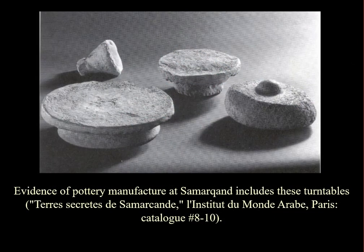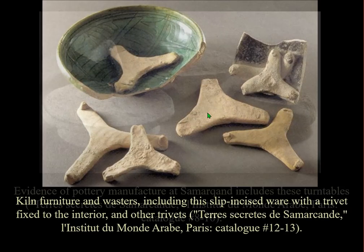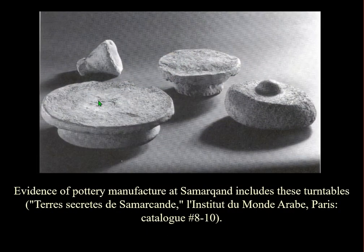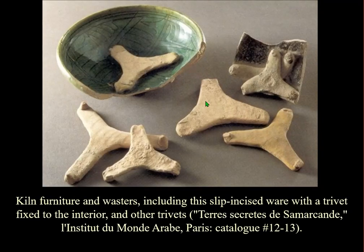Excavations by a French team at Afrasiyab have found evidence for pottery manufacture. These are like turntables found in a kiln site — probably turntables for forming pottery. These are kiln furniture used for separating the pottery during firing, and this is obviously a waster. I've never sampled this, but I have sampled quite a lot of pottery from Samarkand, mostly from the 15th century although a few earlier ones.